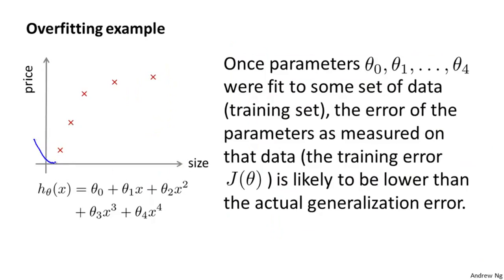We've already seen many times the problem of overfitting, in which just because the learning algorithm fits a training set well, that doesn't mean it's a good hypothesis. More generally, this is why the training set error is not a good predictor for how well the hypothesis will do on new examples. Concretely, if you fit some set of parameters theta zero, theta one, theta two, and so on to your training set, the fact that your hypothesis does well on the training set doesn't mean much in terms of predicting how well it will generalize to new examples not seen in the training set.